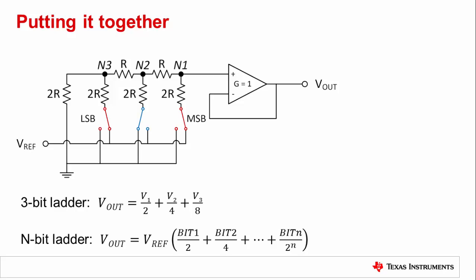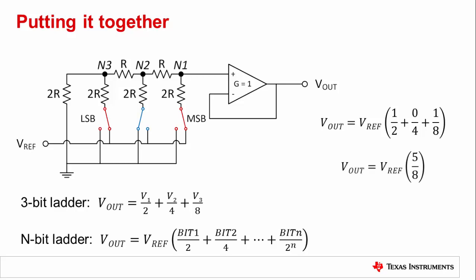In the example shown here, with a 3-bit DAC set to code 101, we can apply the equation we've just developed. Notice the position of the switches, where the blue switch is tied to ground and the red switches are tied to Vref. Putting this into the equation, the DAC output will be 5/8 of the reference voltage. This is exactly what we would expect the output voltage to be for binary code 101 in a 3-bit DAC.